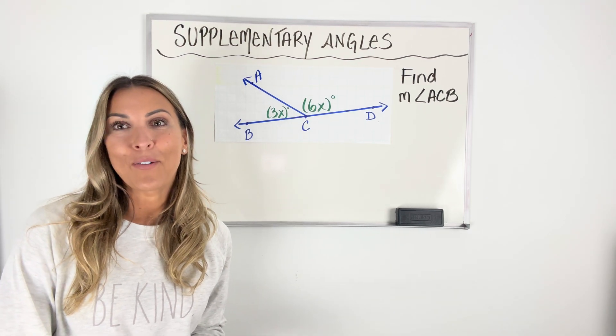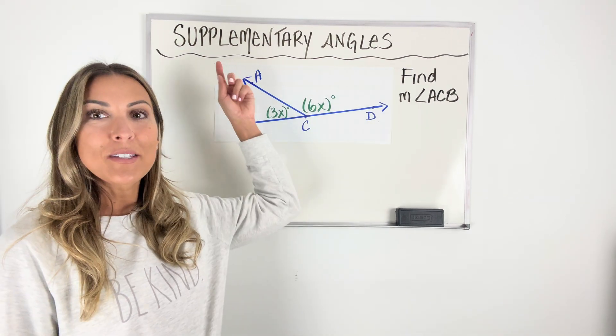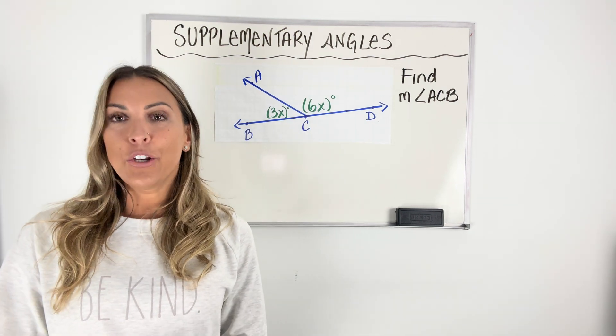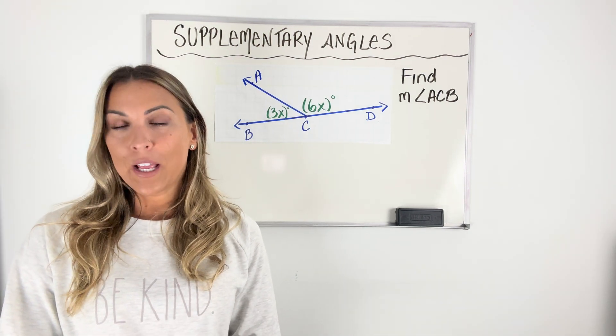Let's learn how to do problems that involve supplementary angles. Supplementary angles are angles whose sum is 180 degrees. So when you add them up, you get 180 degrees.